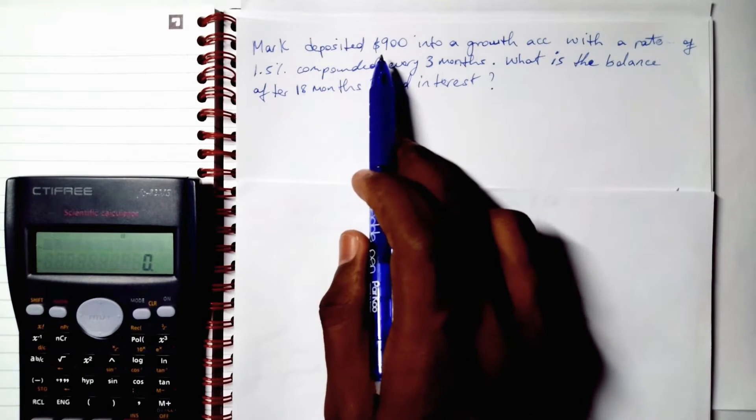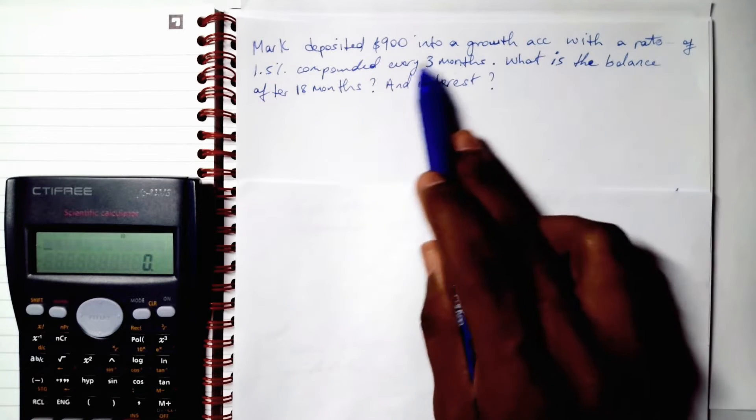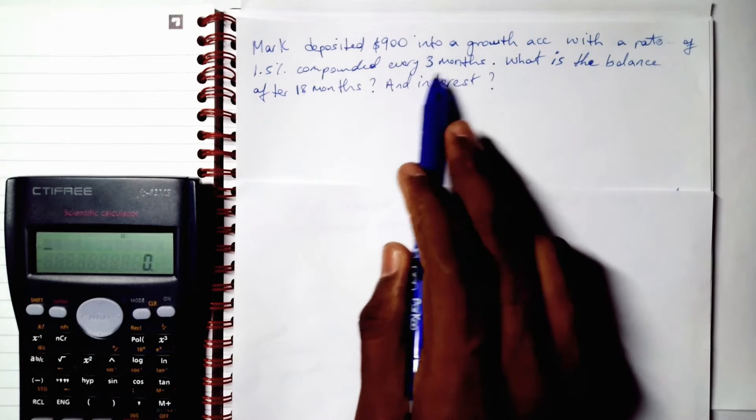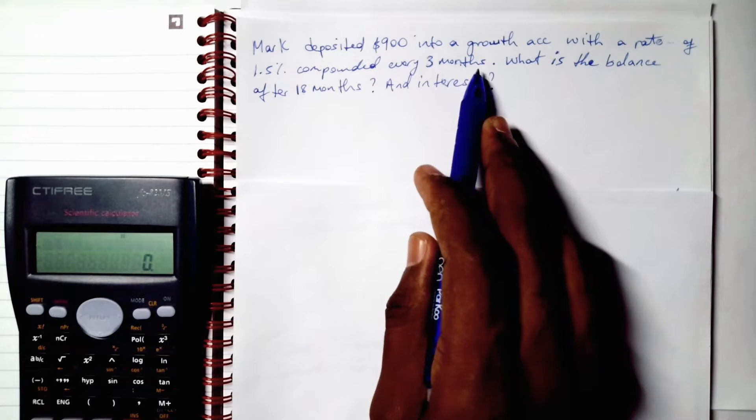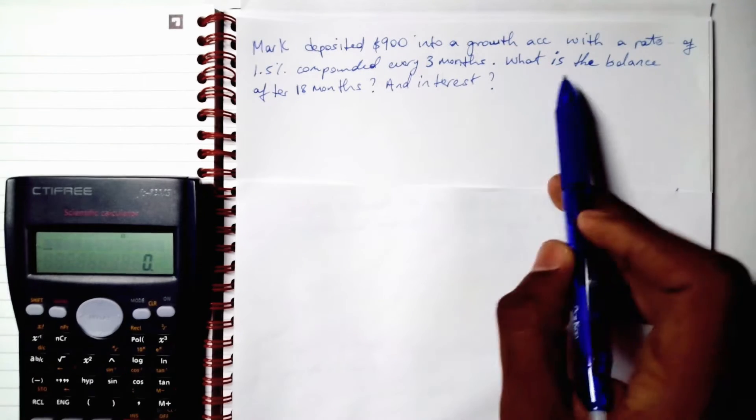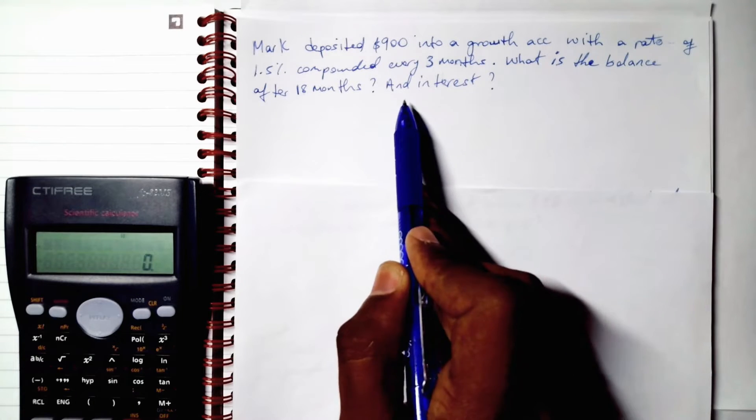Mark deposited $900 into a growth account with a rate of 1.5% compounded every three months. Flag this. What is the balance after 18 months? And interest.